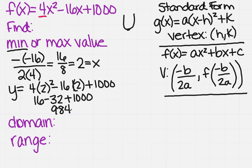You may need to use your calculator to obtain that value. So that's going to be my minimum point. That means my vertex is actually going to be at 2 comma 984.